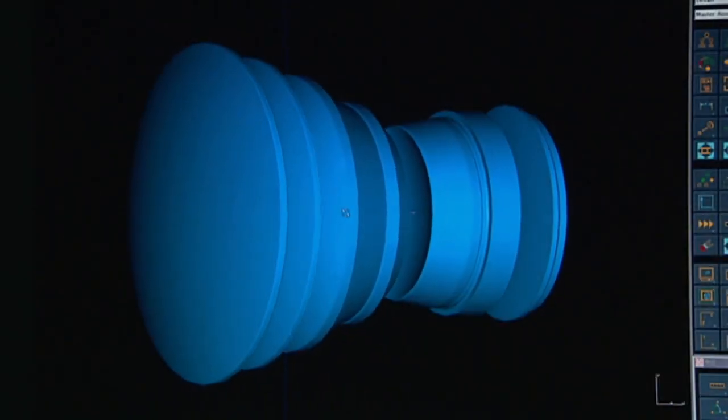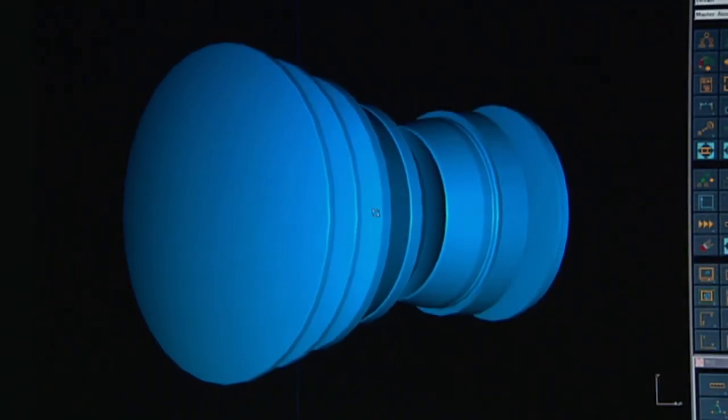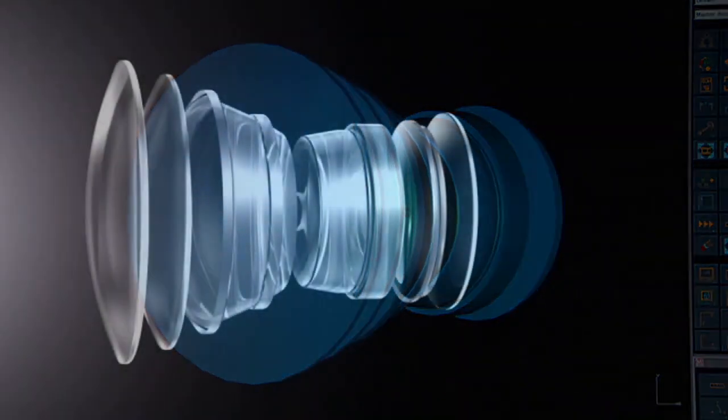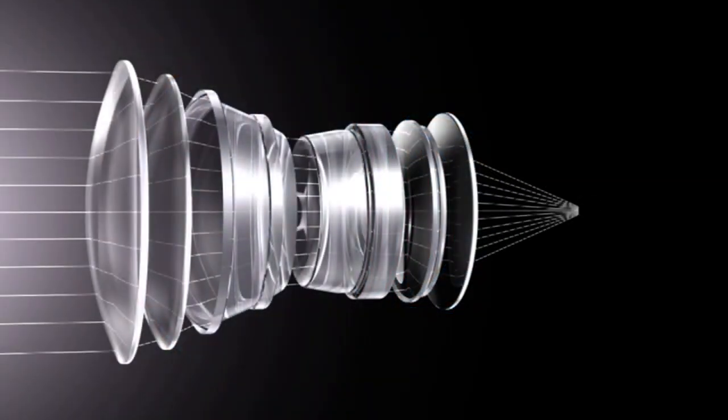The first step toward correcting aberrations is to combine lenses with different characteristics, such as convex and concave lenses.